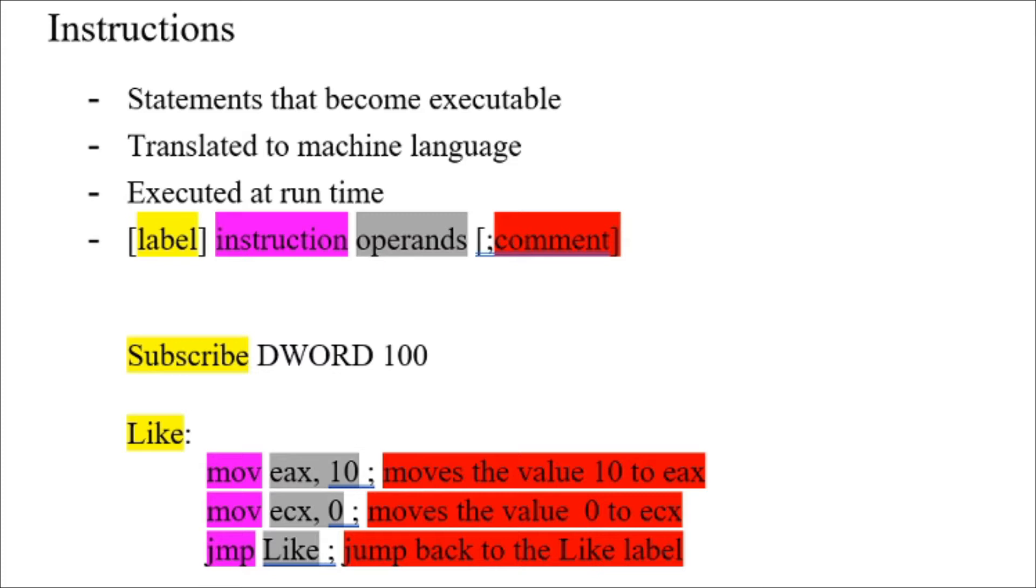Welcome back. Today we'll be learning all about instructions. An instruction is basically a statement or group of statements that become executable when the program is assembled. They do this by translating the instructions using the assembler into machine language. These instructions are executed by the CPU at runtime.